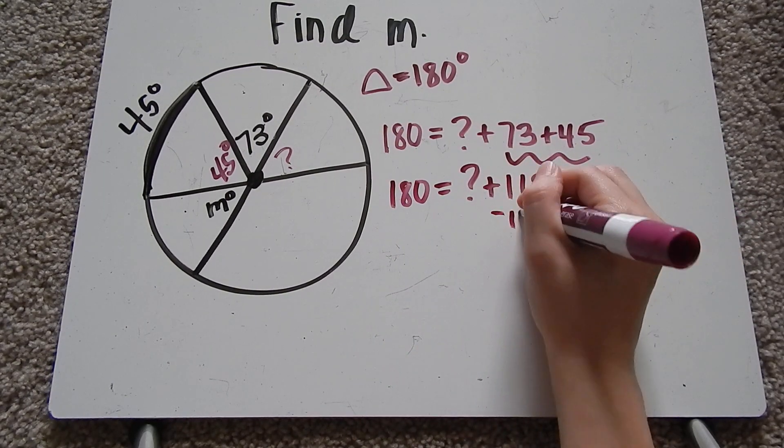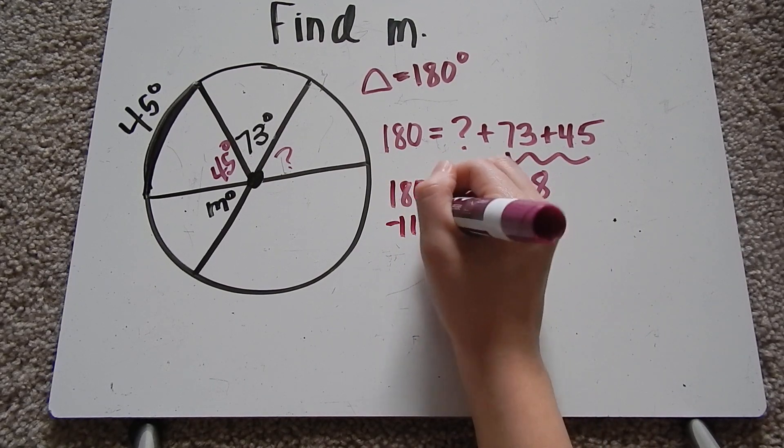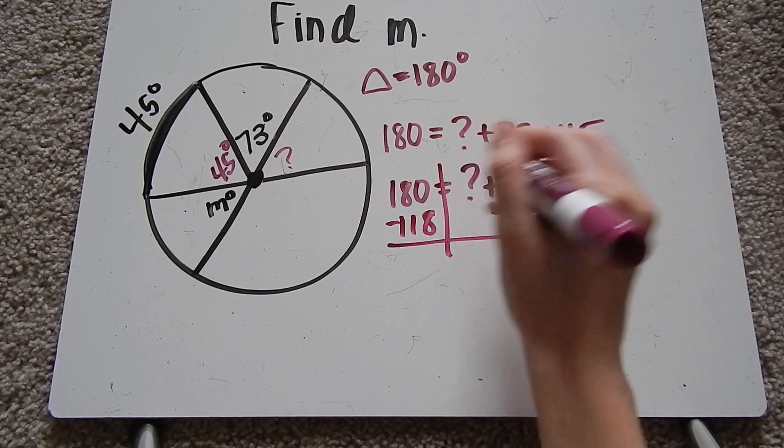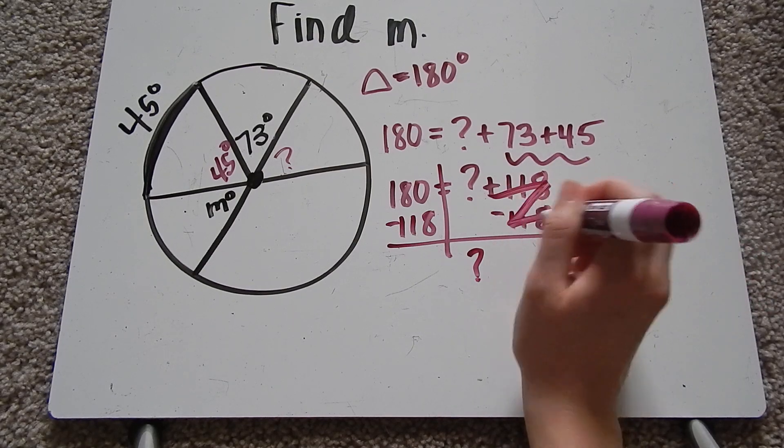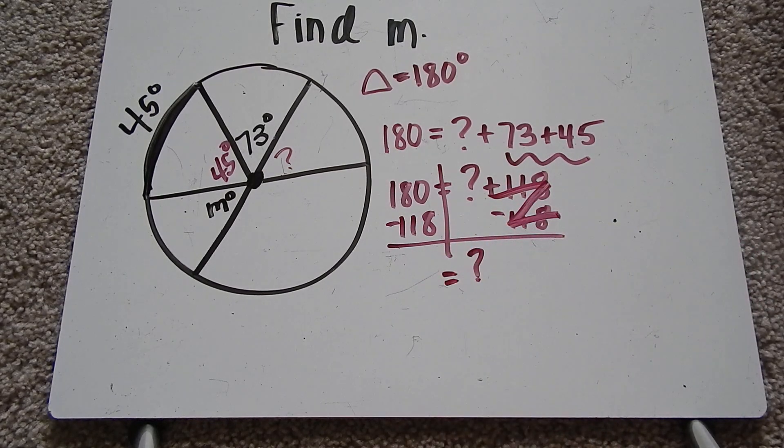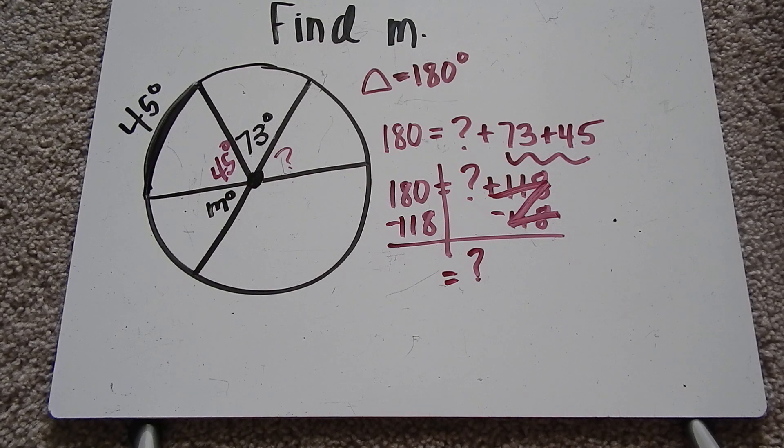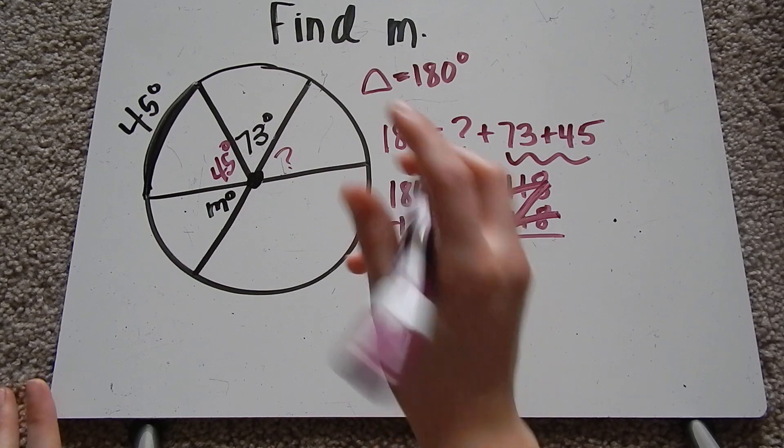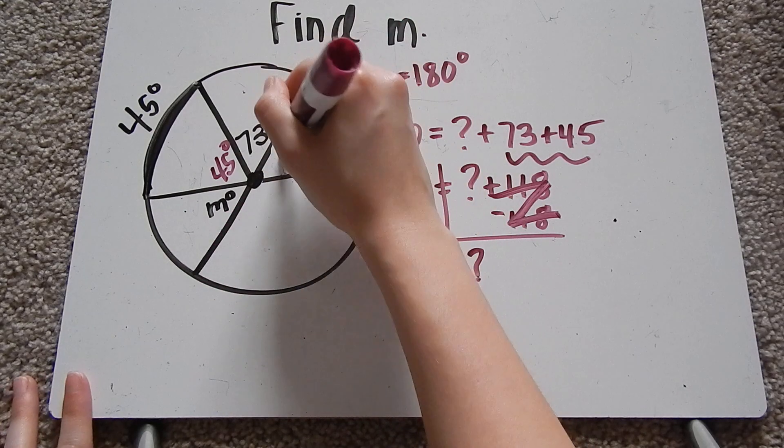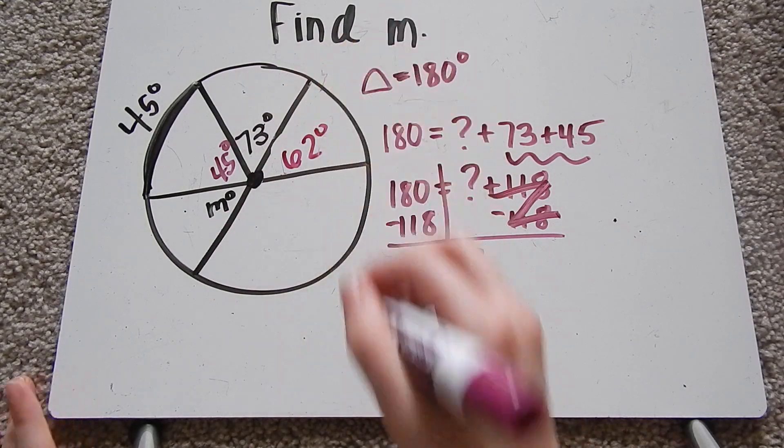Subtract 118 from both sides because I am trying to find my question mark there. So these are going to zero out. 180 minus 118 is 62. So now I know this is 62 degrees.